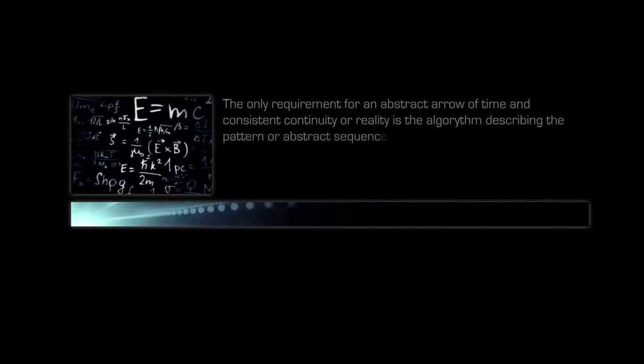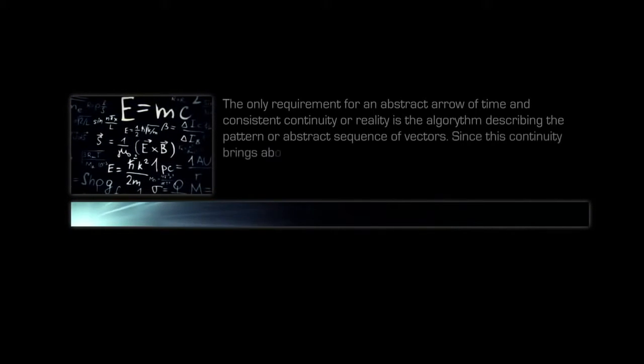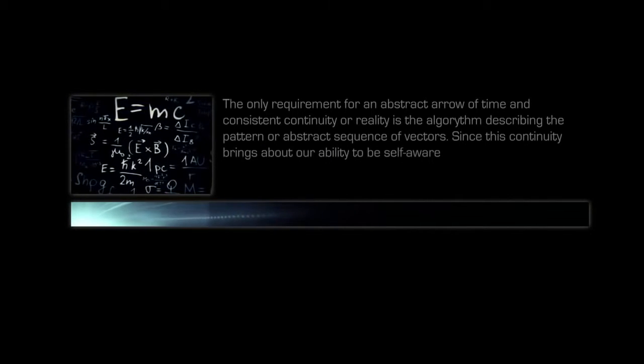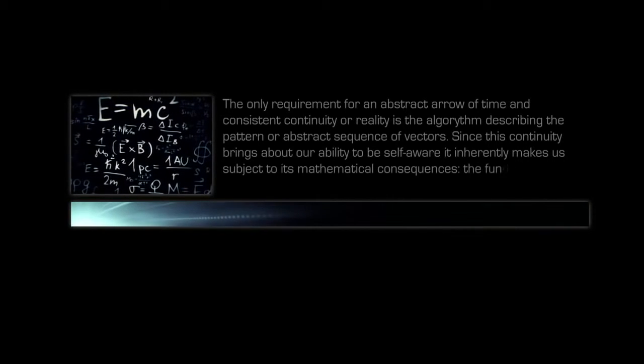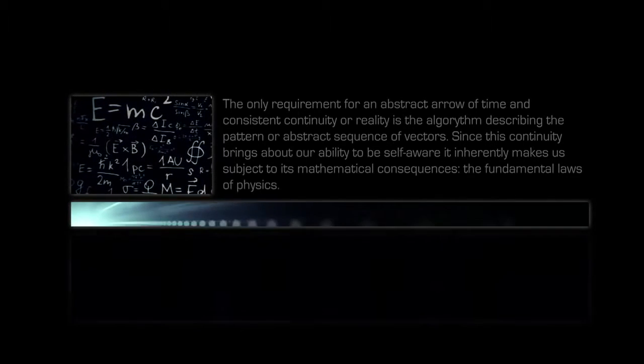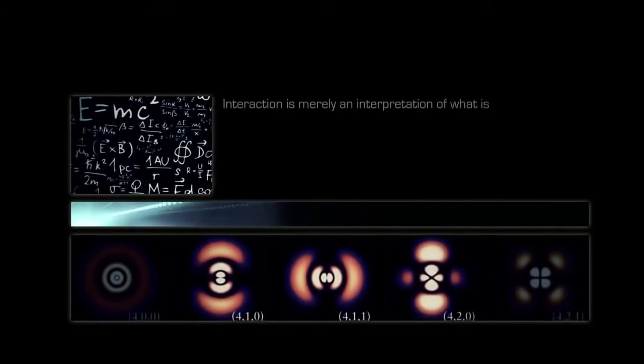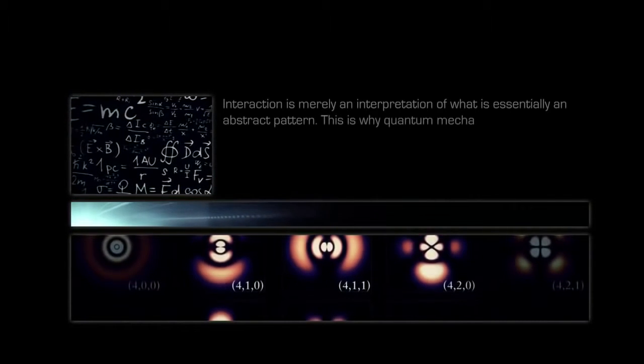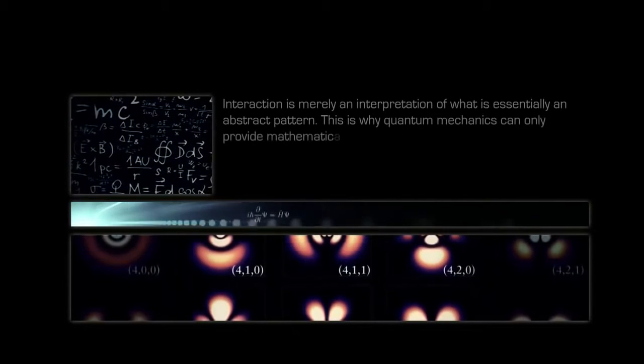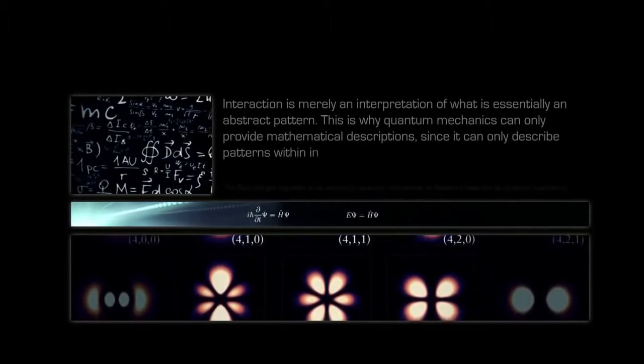The only requirement for an abstract arrow of time and consistent continuity or reality is the algorithm describing the pattern or abstract sequence of vectors. Since this continuity brings about our ability to be self-aware, it inherently makes us subject to its mathematical consequences, the fundamental laws of physics. Interaction is merely an interpretation of what is essentially an abstract pattern. This is why quantum mechanics can only provide mathematical descriptions, since it can only describe patterns within infinite probabilities.